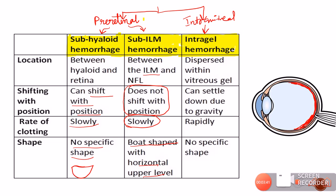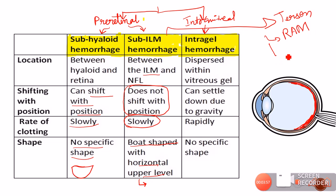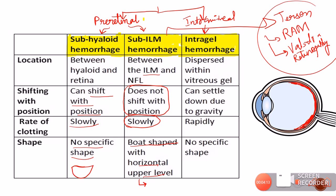Sub-ILM hemorrhage is associated with three important conditions: the first is Terson syndrome, the second is retinal artery macroaneurysm, and the third is Valsalva retinopathy. These are the three conditions basically associated with sub-ILM hemorrhage.